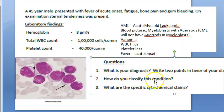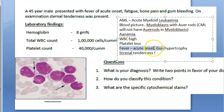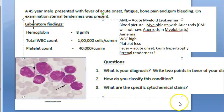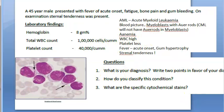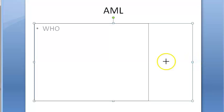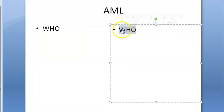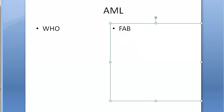Two additional clues supporting AML: gum hypertrophy causing gum bleeding, and sternal tenderness — the biggest clinical clue. Now, how do we classify this condition? There are two classifications for AML: WHO classification and FAB classification. WHO stands for World Health Organization, and FAB stands for French-American-British.